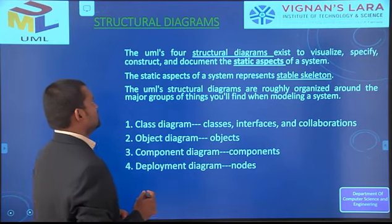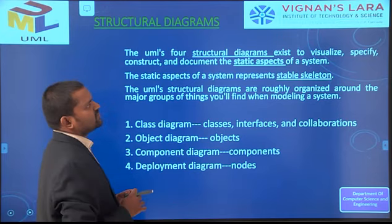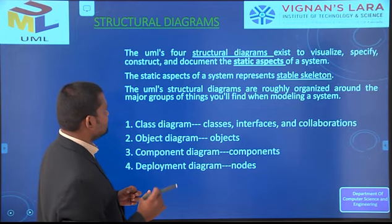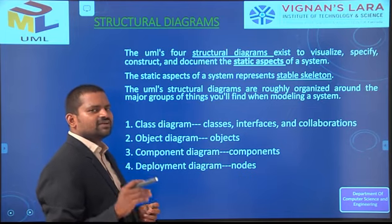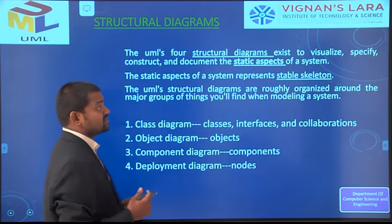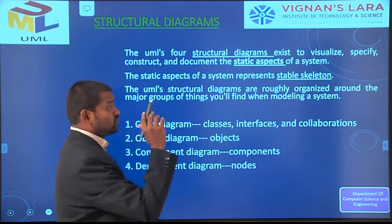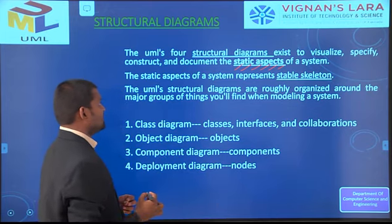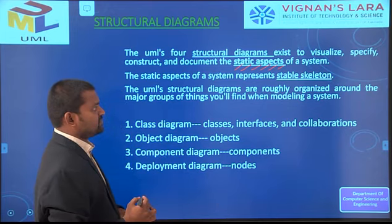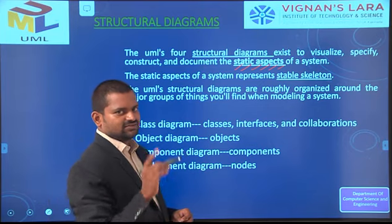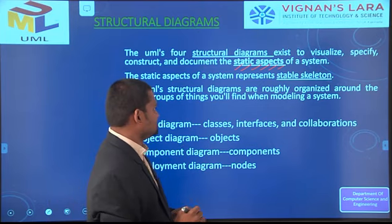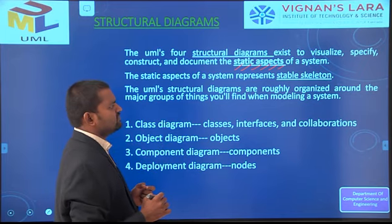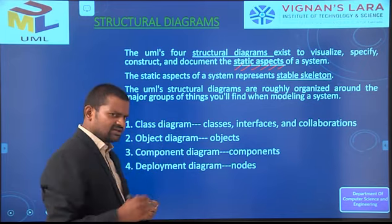The four UML structural diagrams are used to visualize, specify, construct, and document the system. They show only the static parts — the skeleton — of the system. Structural diagrams are organized around the major groups found in the model: class diagram contains classes, interfaces, and collaborations; object diagram contains objects; component diagram contains components; deployment diagram contains nodes.